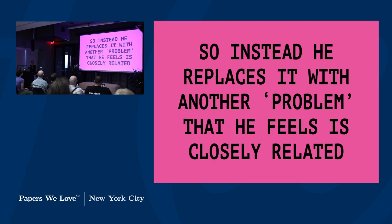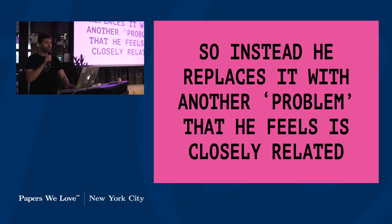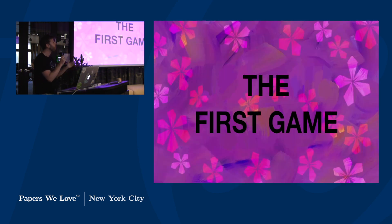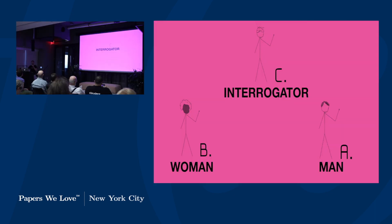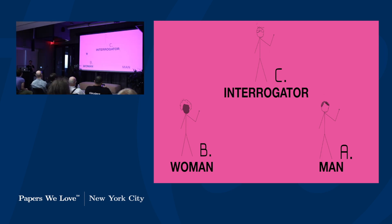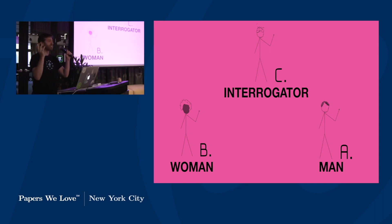So instead, he replaces this problem with another problem — though really, it's a game, and really, three games. The first game he describes is where you have an interrogator, labeled C, talking to two different participants labeled X and Y. One is a woman, B, and another is a man, A. It's a somewhat jumbled soup of terms about liars and non-liars.